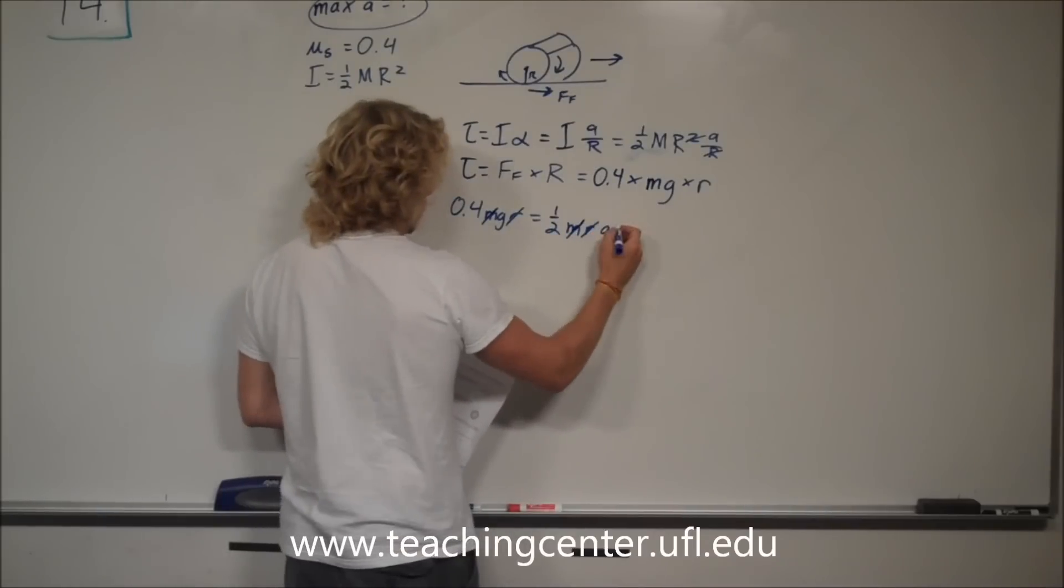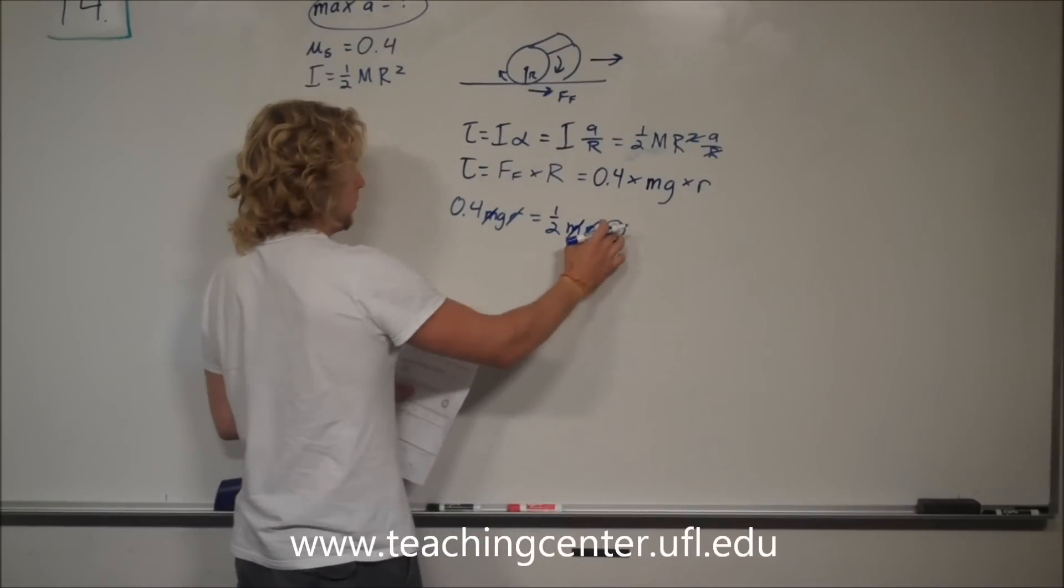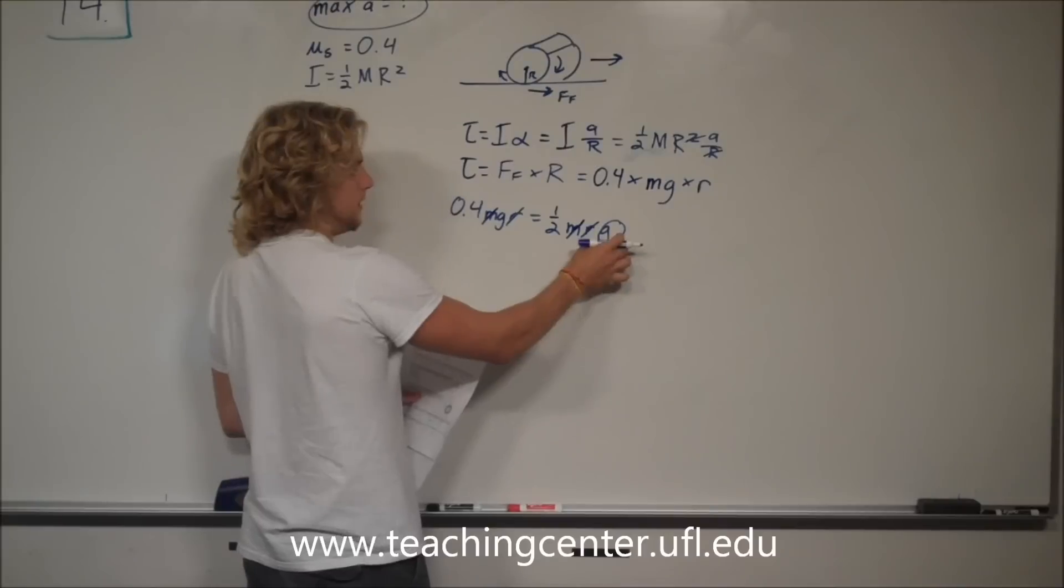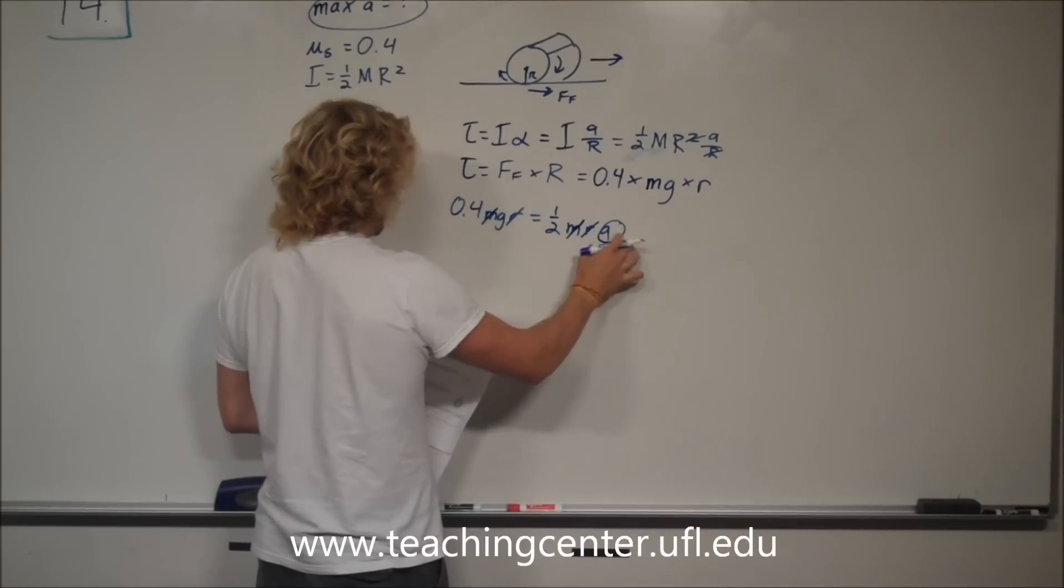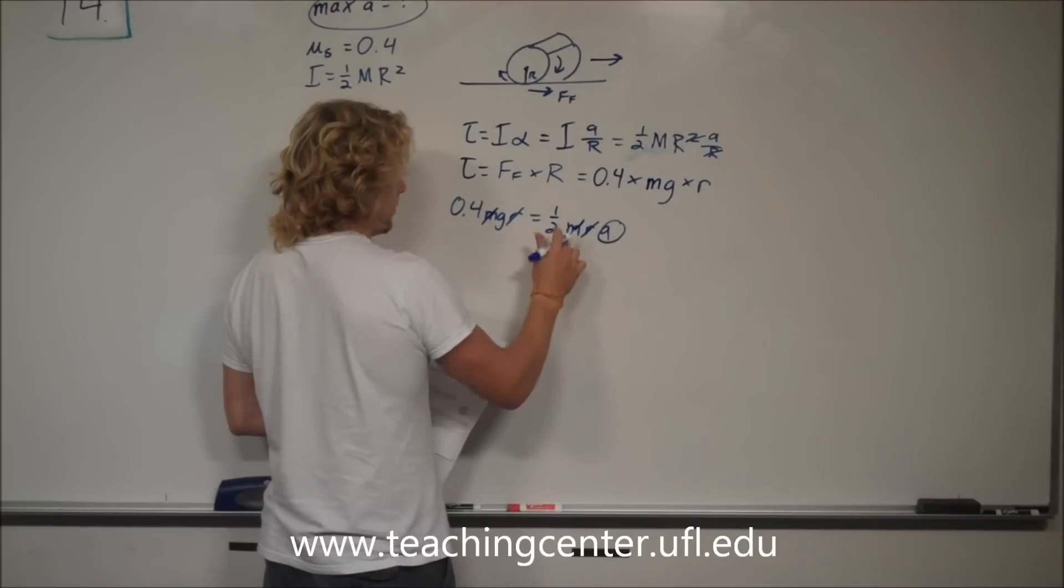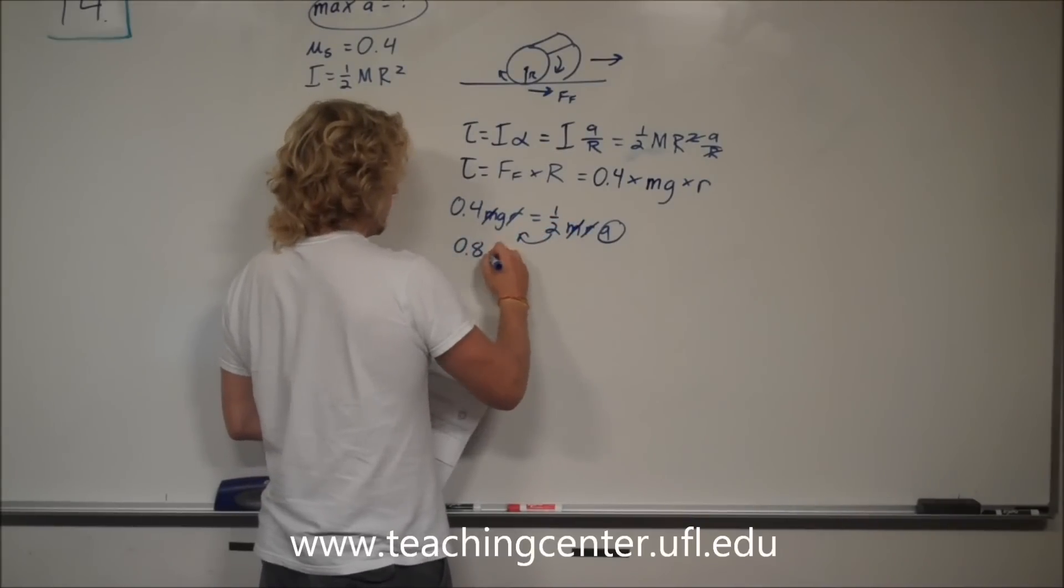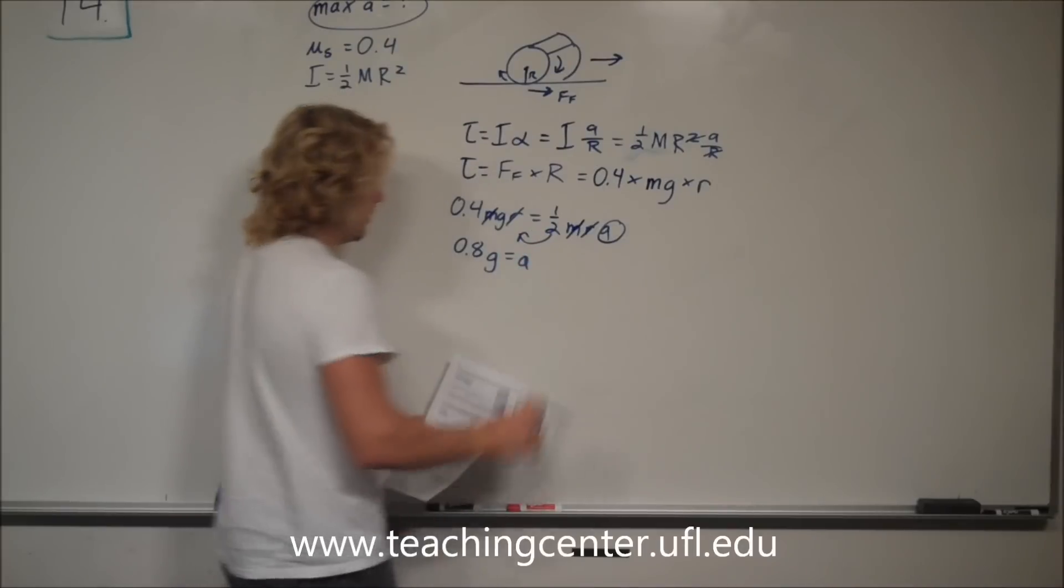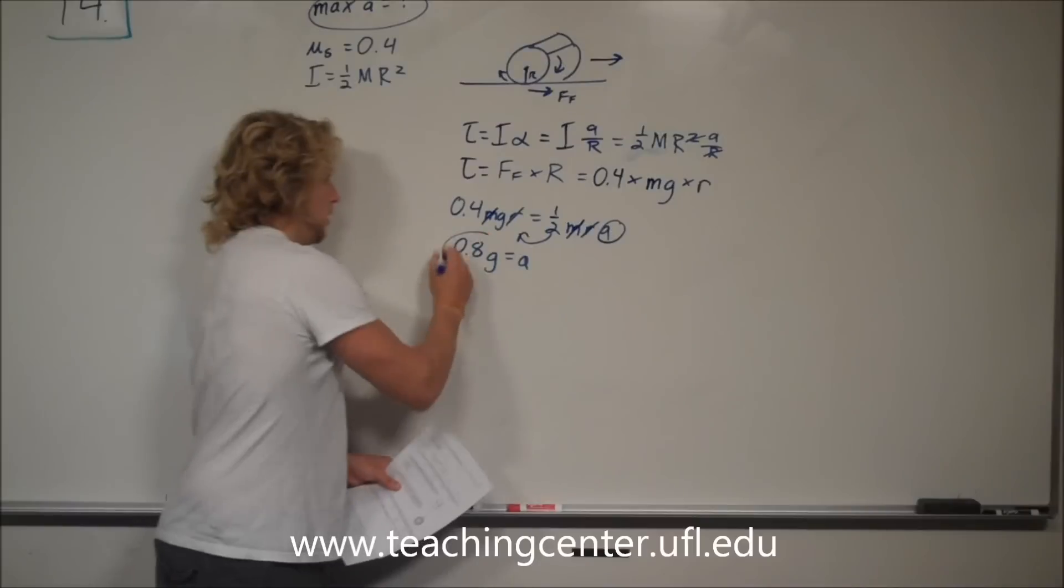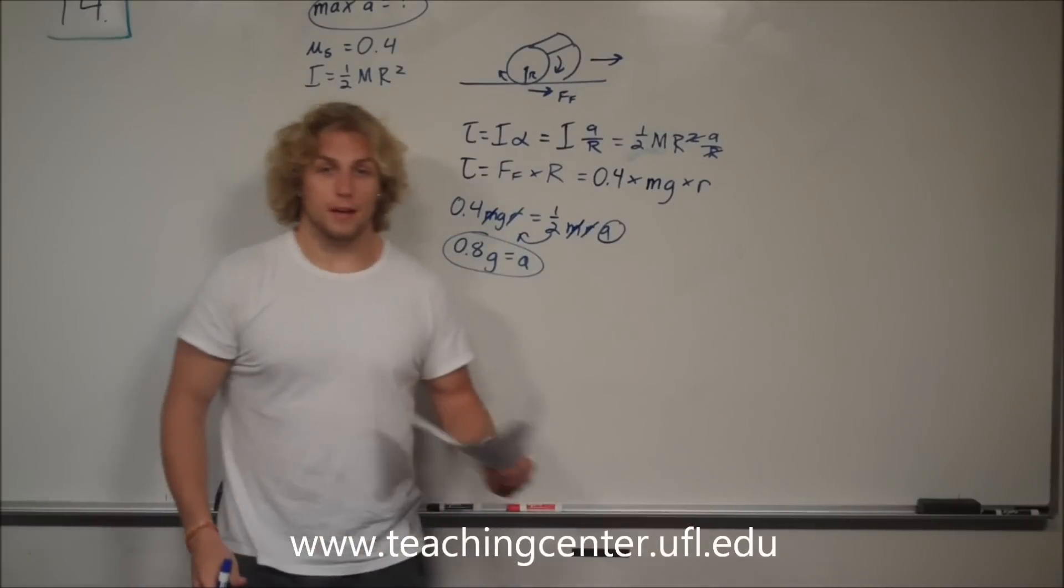Now we're looking for this guy, that's what we're looking for. So, let's go ahead and isolate him. We isolate him by multiplying everything by two. So, now we have 0.8 g equals a. That's one of the choices. That's the correct answer.